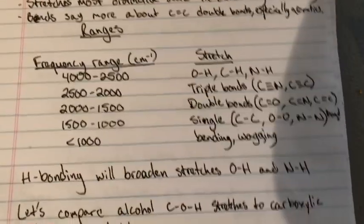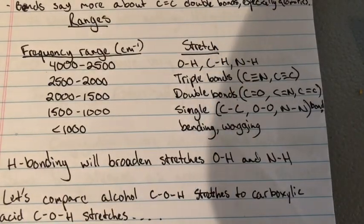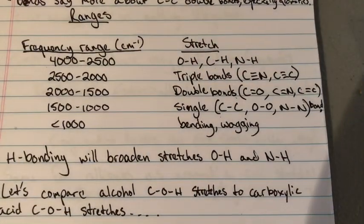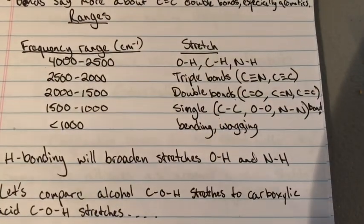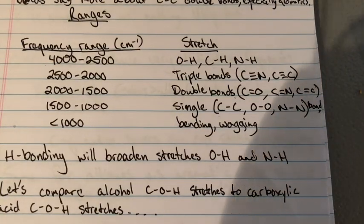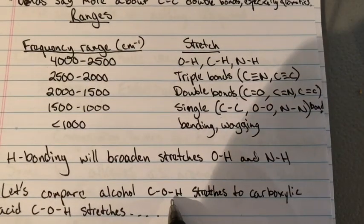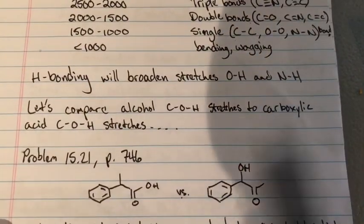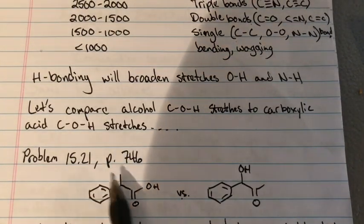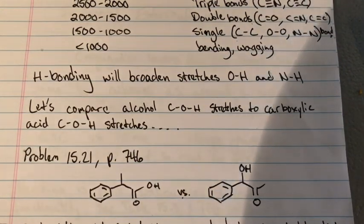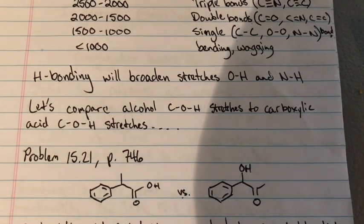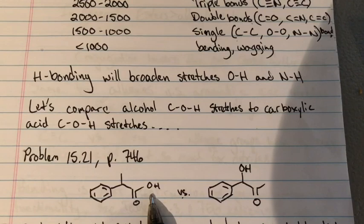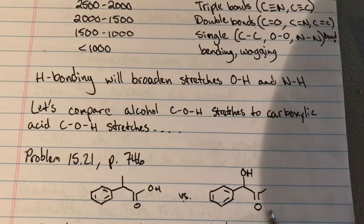Hydrogen bonding — an intermolecular interaction — will broaden stretches for O-H and N-H, because those lone pairs are going to tag along with the hydrogen, either acting as acceptor or donor. It's kind of in a struggle for where that hydrogen is going to be. If you compare an alcohol O-H stretch to a carboxylic acid O-H stretch, it's going to be a little bit different. Take a look at problem 15.21 on page 746 — compare this carboxylic acid O-H group to the O-H group adjacent to a ketone.